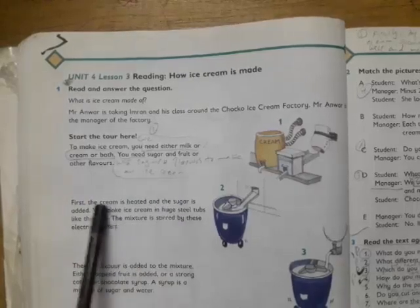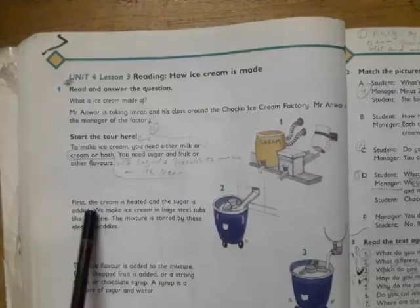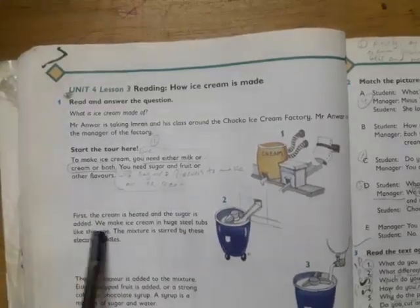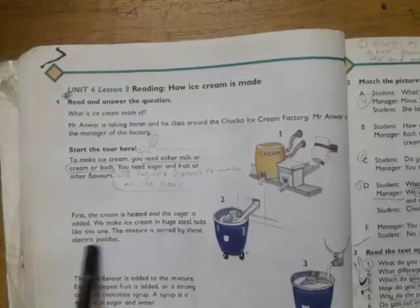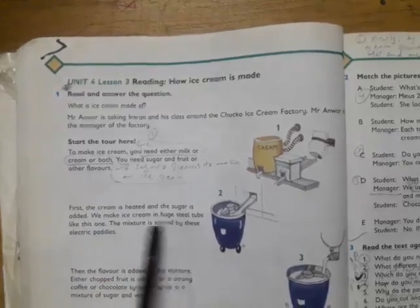To make an ice cream you need either milk or cream or both. You need sugar and fruit or other flavors. In the first step we need either milk or cream or both for making an ice cream. First, the cream is heated and the sugar is added. We make ice cream in huge steel tubs like this one. The mixture is stirred by these electric paddles.